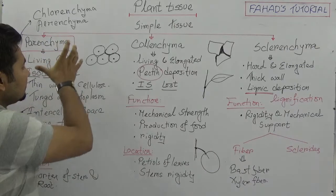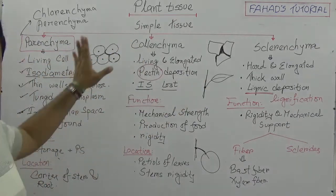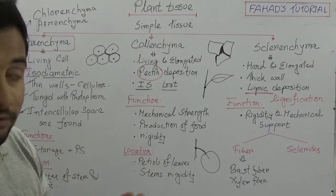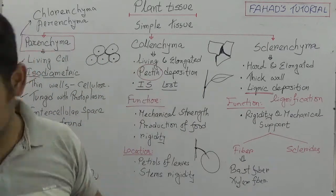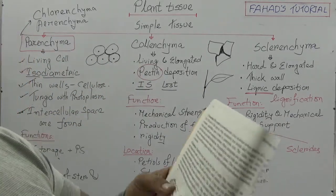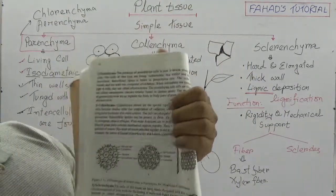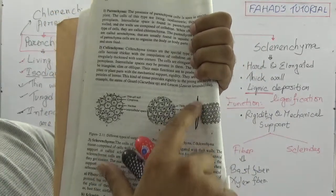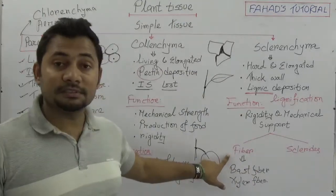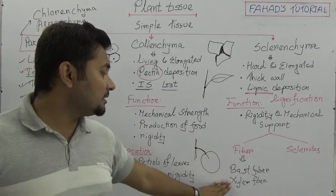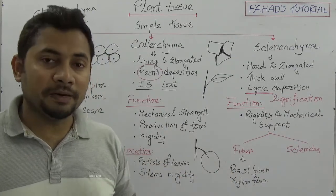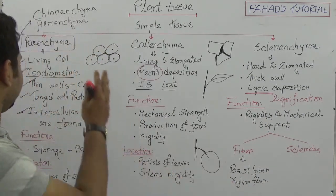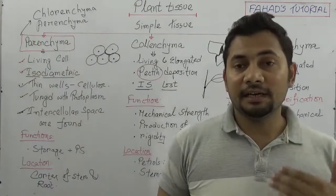To summarize, I wrote simple distinguishing factors for these simple tissues. Parenchyma, colenchyma, and sclerenchyma are all part of simple tissue because they contain similar types of cells. Looking at the figures, in the case of sclerenchyma, the elongated part gives the word 'fibers' — xylem fiber in xylem and bast fiber in phloem. Xylem fiber is also known as wood fiber.